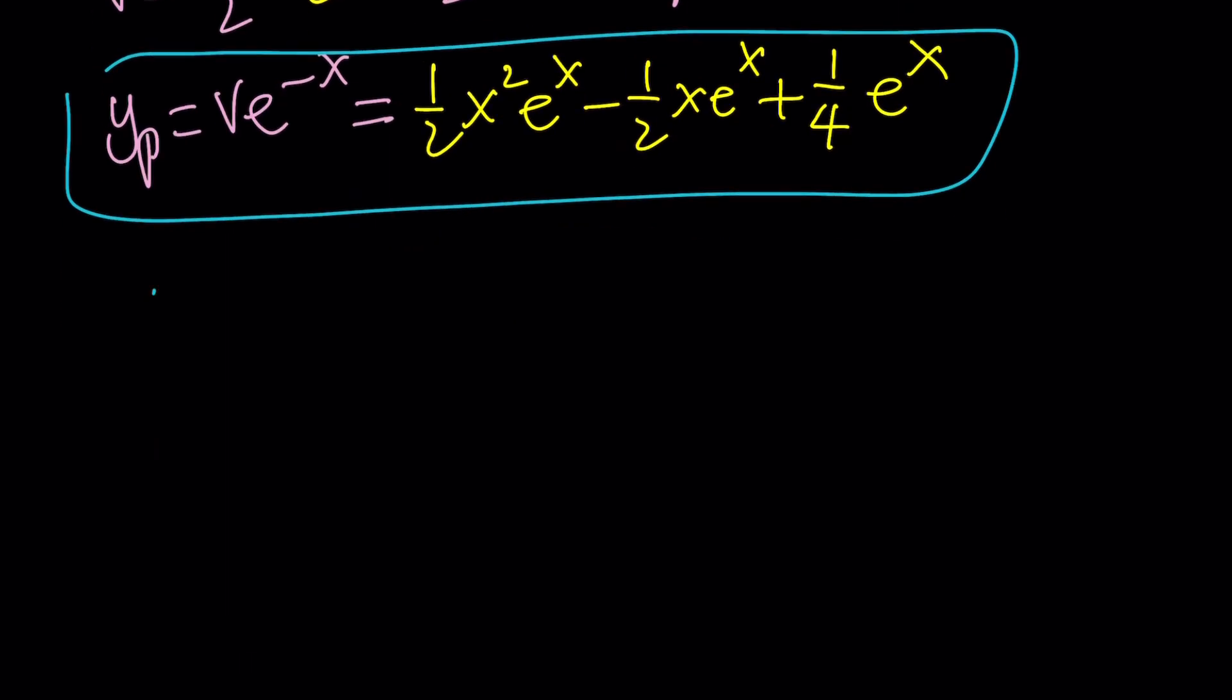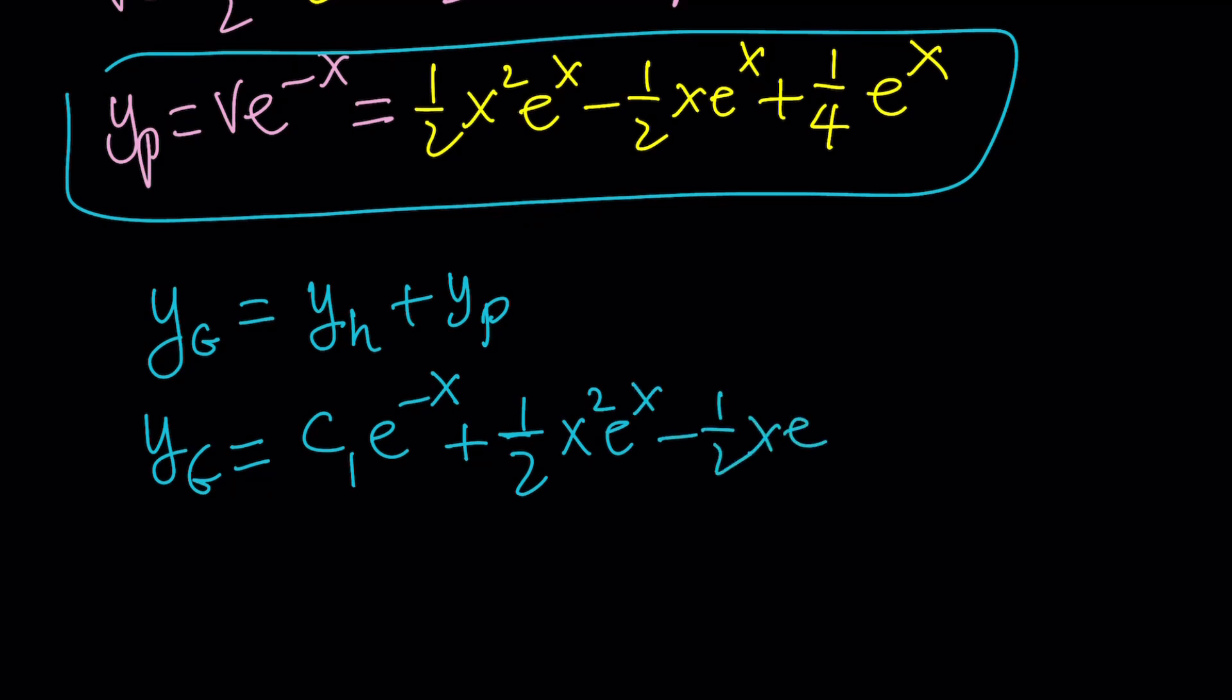Let's go ahead and put it together. The general solution is the homogeneous solution plus the particular solution. So the general solution is going to be c₁e⁻ˣ. Remember, we replaced c₁ with v, and that's how we got the particular solution. Plus (1/2)x²eˣ - (1/2)xeˣ + (1/4)eˣ plus the infamous c. And that brings us to the end of this video.